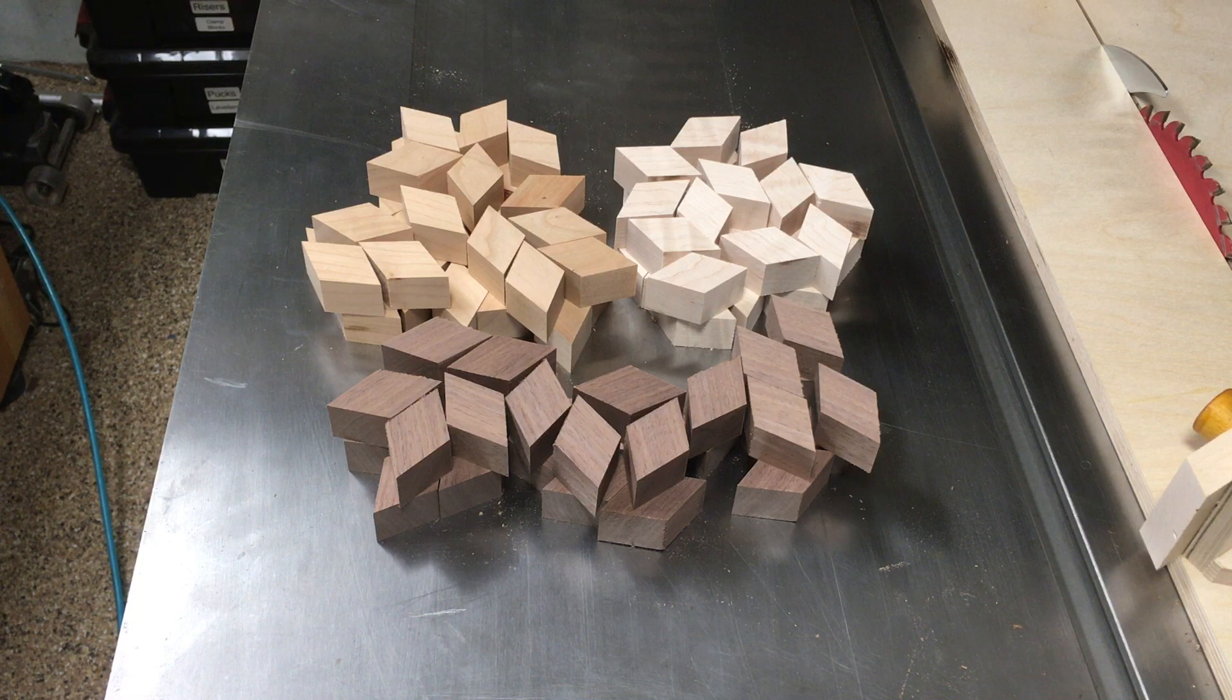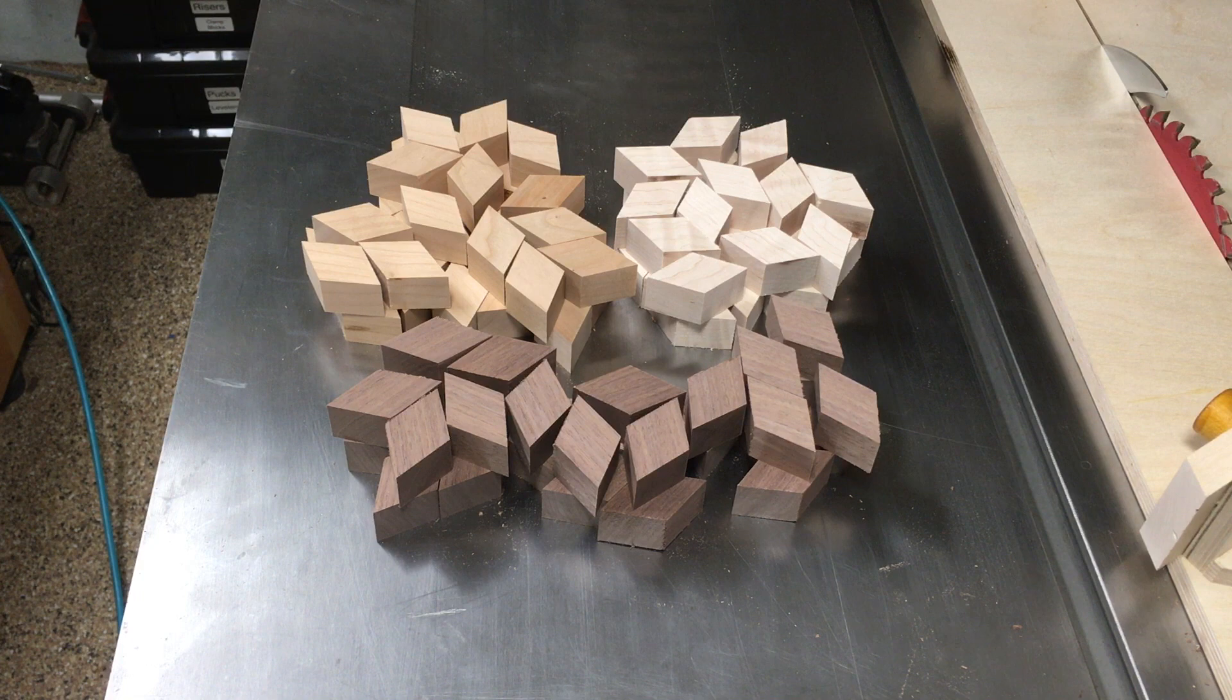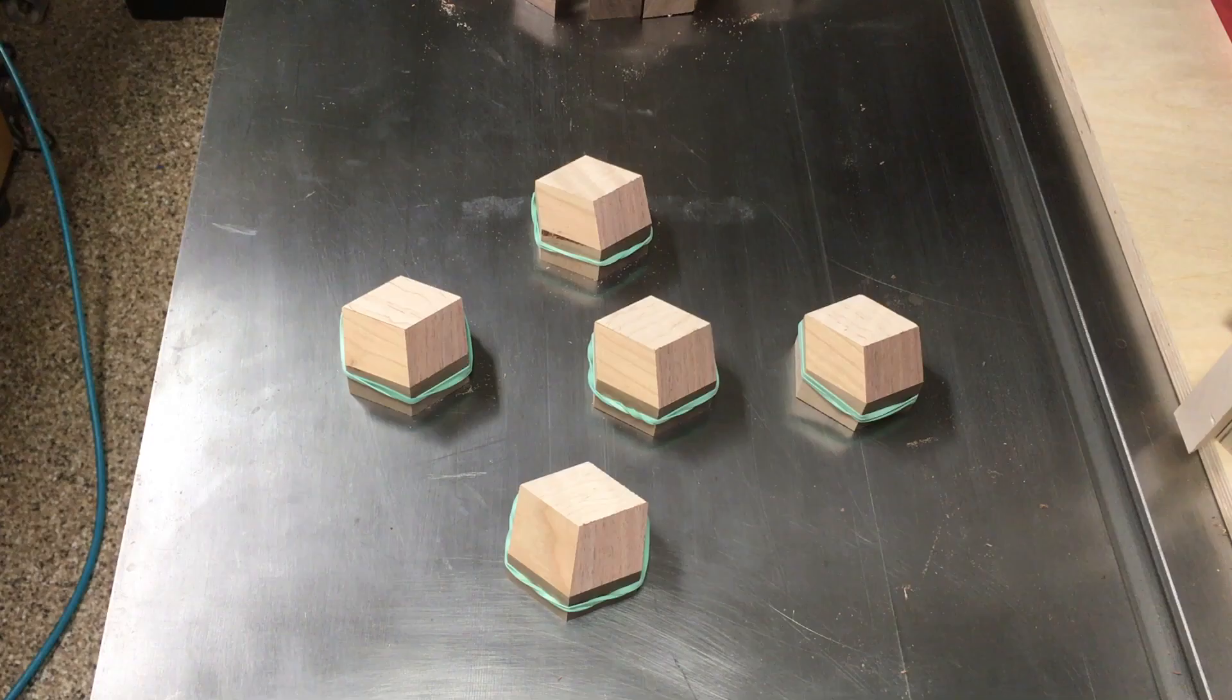Here are all the cut pieces for this build. It only took about 40 minutes to cut them all. That's another argument for the two cut method. Even if you could save half that time with a one cut approach, any loss of precision would cost you a lot more time during assembly than you saved.